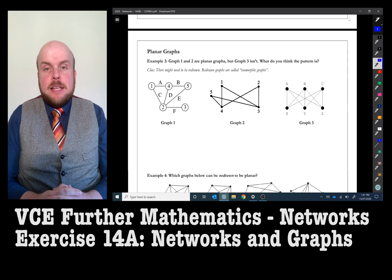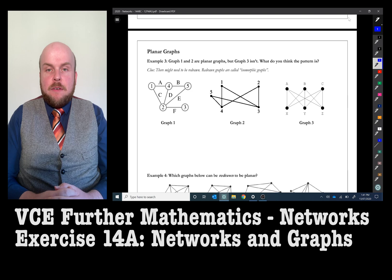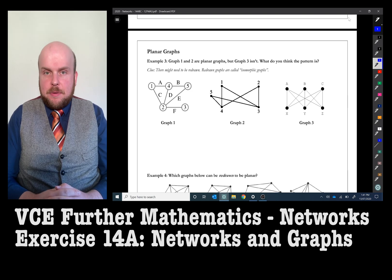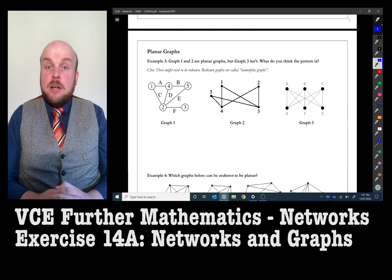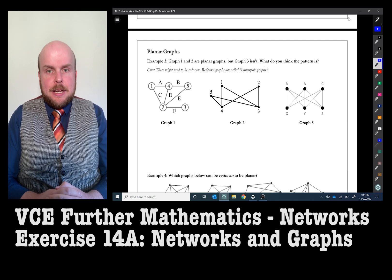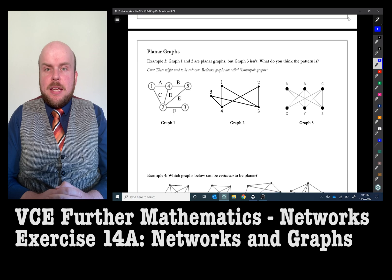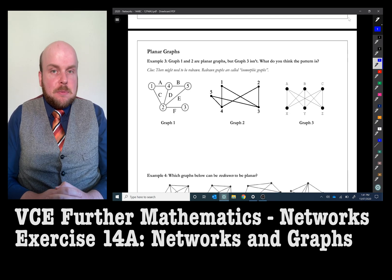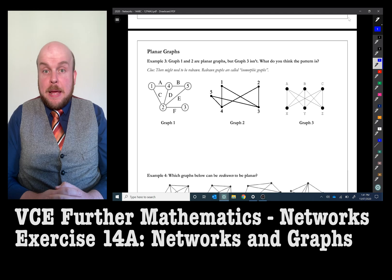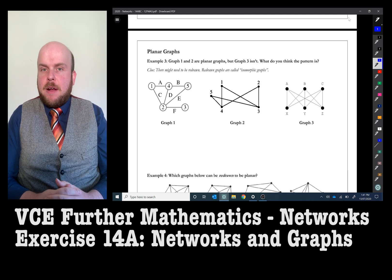I have got three examples of graphs here, graph one, graph two, graph three. Graph one is planar. Graph two is planar. Graph three is not planar. What is it about graphs one and two that make them planar and graph three not?